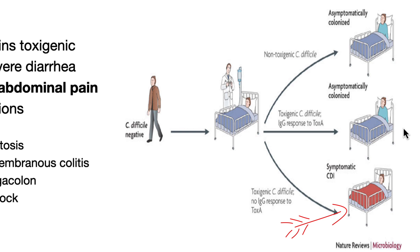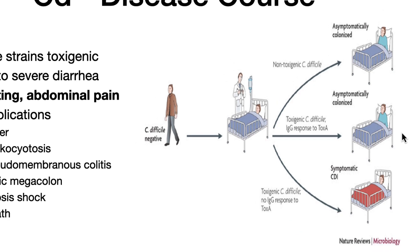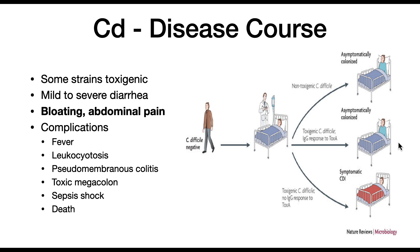In the absence of a strong immune response, C. diff pathogenesis occurs, including fever, leukocytosis — which is a high white blood cell count in the intestines or in the blood — pseudomembranous colitis, which is an inflammation of the colon caused by C. difficile, toxic megacolon, which is a large dilation of the colon, septic shock, and sometimes death.